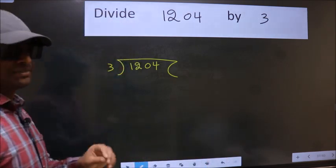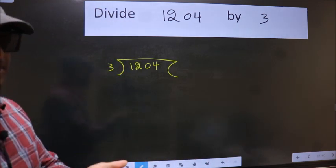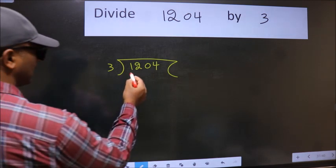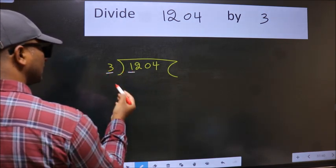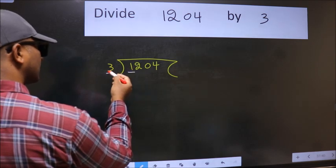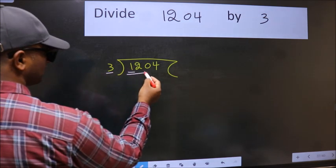This is your step 1. Next, here we have 1 and here 3. 1 is smaller than 3, so we should take 2 numbers: 12.